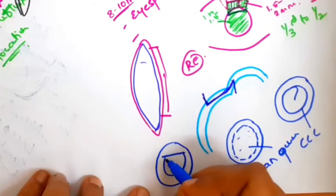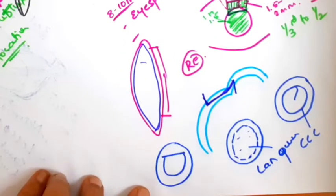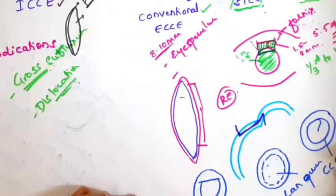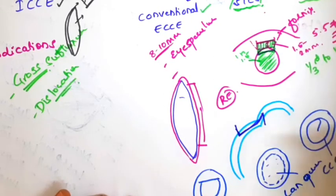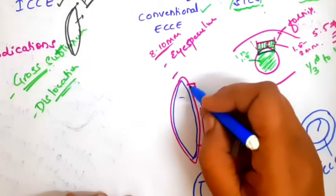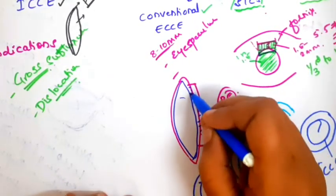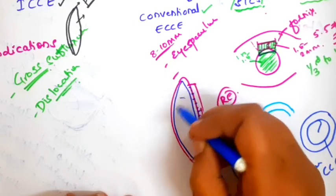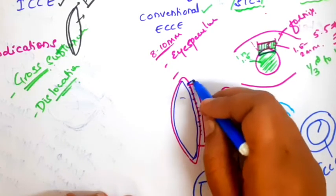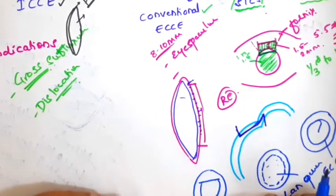There is one more technique called the envelope technique, usually done in case of hypermature cataracts. You give a horizontal incision and open the anterior capsule — the liquefied cortex comes out followed by the Morgagnian lens or nuclear sclerotic lens. You then extend the opening of the anterior capsule and complete the surgery. After the can opener, this part of the anterior capsule is removed, leaving you with the posterior capsule, rim of anterior capsule, and the lens material.